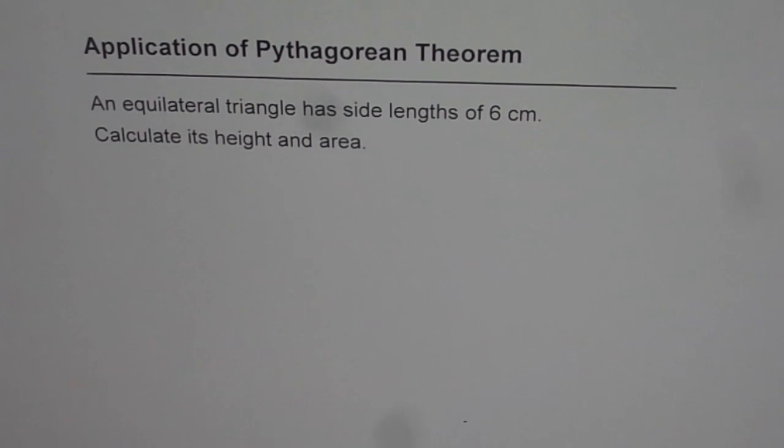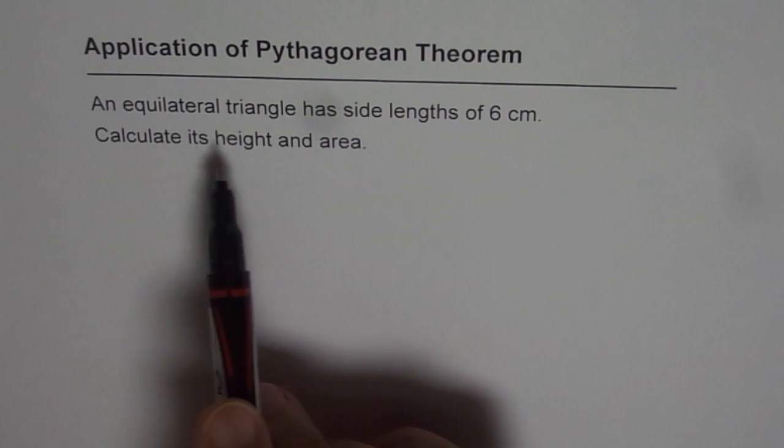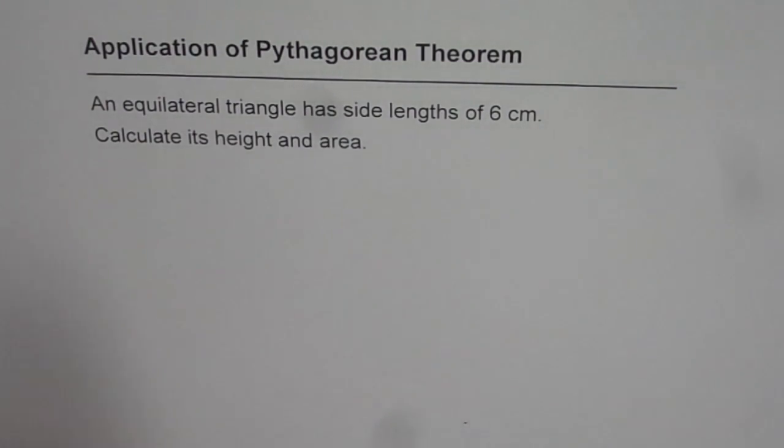In this set of videos, we are considering application of Pythagorean theorem. I am Anil Kumar and in this video, let us consider an equilateral triangle. The question is: an equilateral triangle has side length of 6 cm. Calculate its height and area.